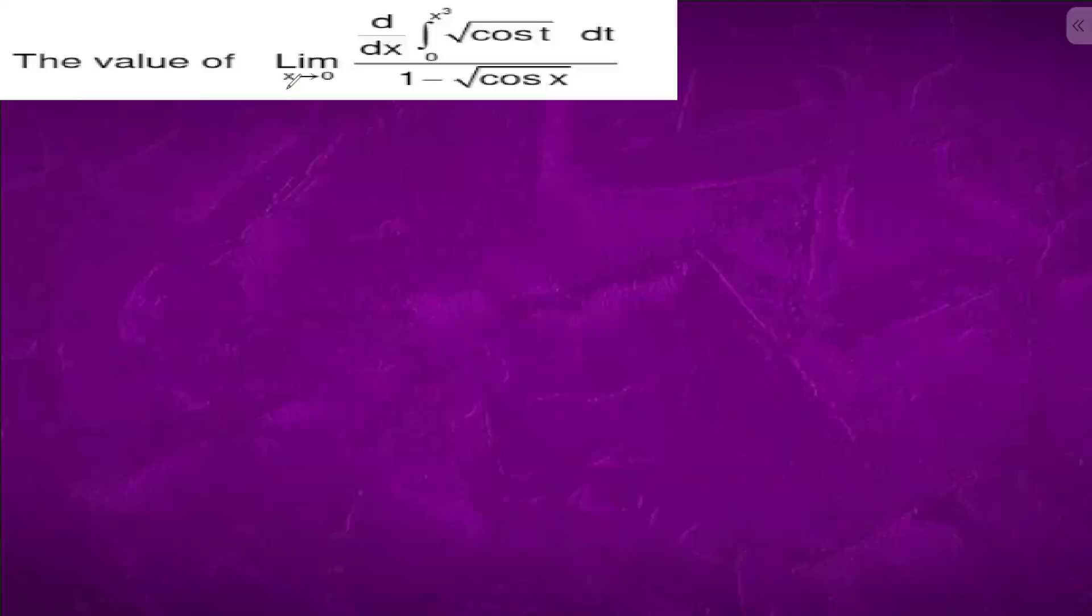When we have x tending to 0, this will become the form of 0 by 0. Then only this is valid, so we have to calculate limit x tending to 0. We have first differentiation.